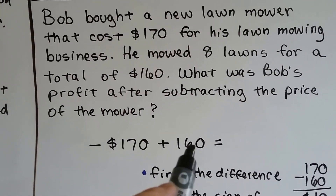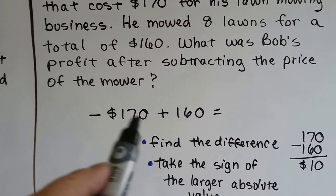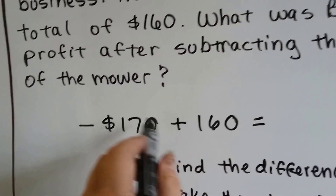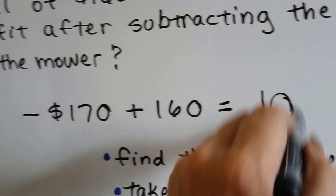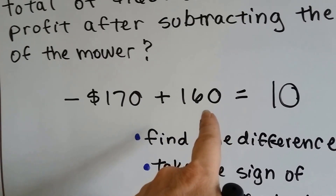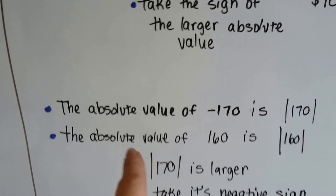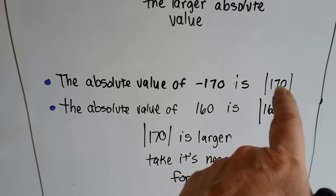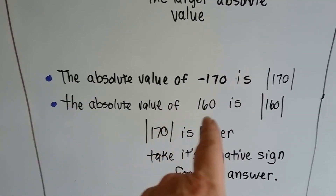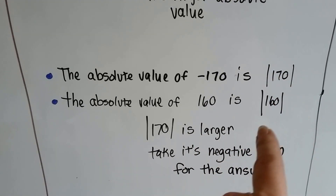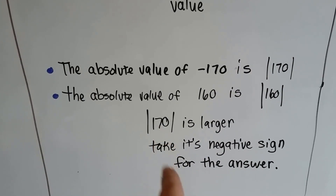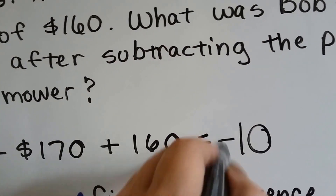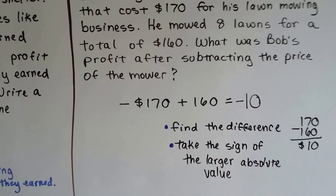Then he earned $160. Does he have profit? The difference between $170 and $160 is only $10. But which one is farther from zero? The absolute value of negative $170 is $170, and the absolute value of $160 is $160. Since $170 has the larger absolute value, we take its negative sign. The answer is negative $10 — Bob's at a loss, and he'll need to mow a couple more lawns to pay for his lawnmower.